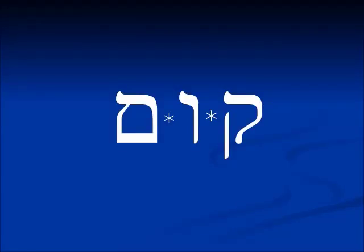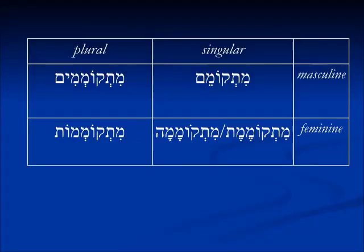The point is that in the Piel we're going to see that last consonant double. There is a similar phenomenon in the Hitpa'el. We're going to look at the verb kum, which means 'to get up' in the Pa'al. In the masculine singular it's mitkomem — the last consonant doubles. In the feminine we see two forms: mitkomemet or mitkomema, both recognizable as feminine forms. Plural forms are mitkomemim and mitkomemot.